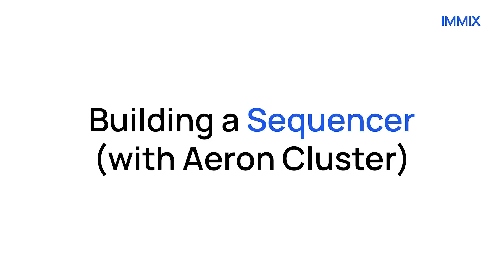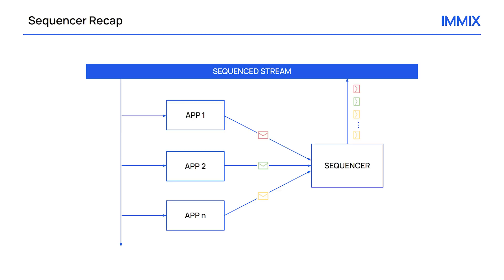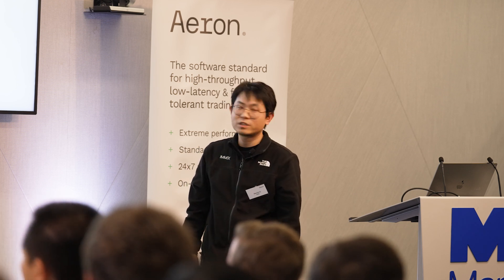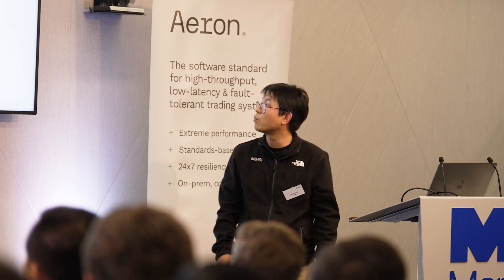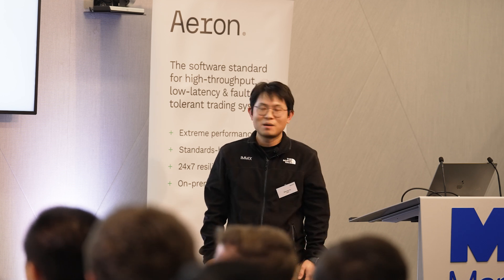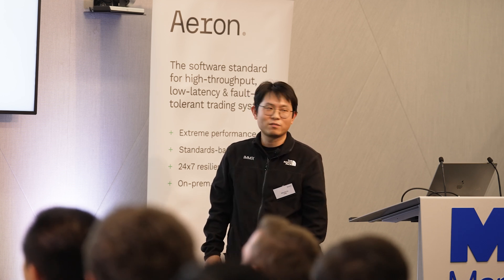So what we have done is built a sequencer using Aeron Cluster. Just a little recap on what a sequencer is — it's actually a very simple concept. You have unsequenced input from your distributed system, from your microservices, from multiple applications, then there's a component in the middle that sequences everything, and then you have a sequenced output. This is how you manage global total ordering. Conceptually it's very simple, but the implementation can be quite challenging.